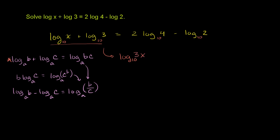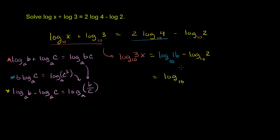On the right-hand side, using the coefficient property, 2 times log base 10 of 4 can be rewritten as log base 10 of 4 to the second power, which is log base 10 of 16. Then, using the difference property, log base 10 of 16 minus log base 10 of 2 equals log base 10 of 16 over 2, which simplifies to log base 10 of 8.